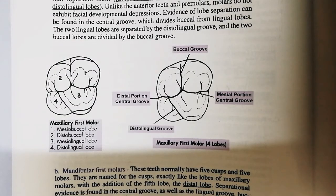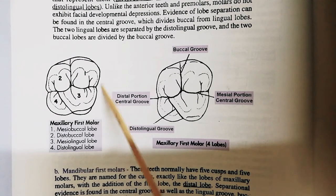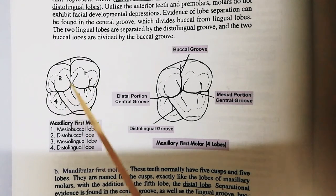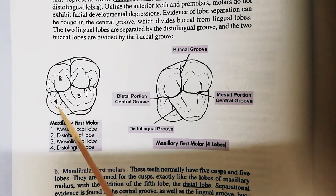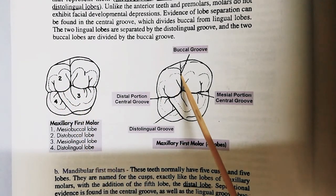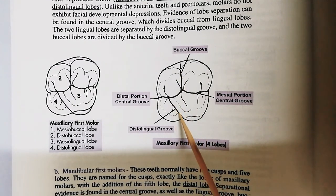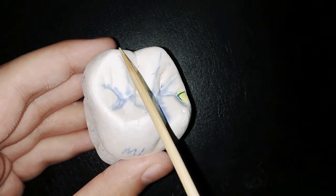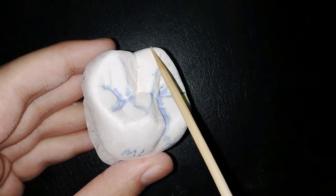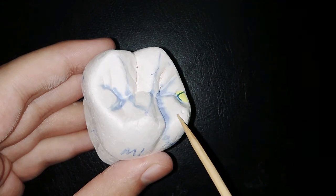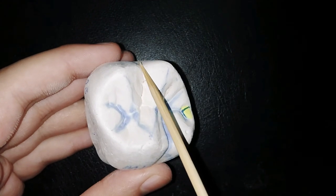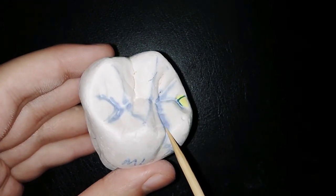In these diagrams you can see the occlusal aspect of the maxillary first molar. If this is the mesial side and this is the distal side, then this is the mesiobuccal lobe, this is the distobuccal lobe, this is the mesiolingual lobe, and this is the distolingual lobe. Here you can see the buccal groove and this is the distolingual groove. Here I have a maxillary first molar — this is the mesiobuccal lobe, this is the distobuccal lobe, this is the distolingual lobe, and this is the mesiolingual lobe. Here we have the buccal groove and this is the distolingual groove.